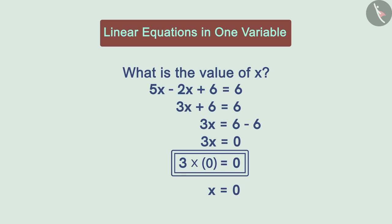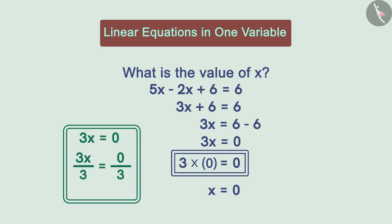There is one more method to find this answer. In this equation, we divide both sides by 3 and then, we find 0 by 3 on the right-hand side which is equal to 0. We get x is equal to 0.